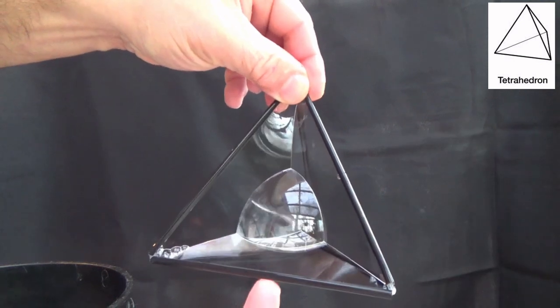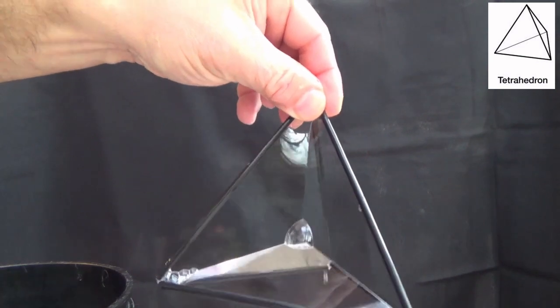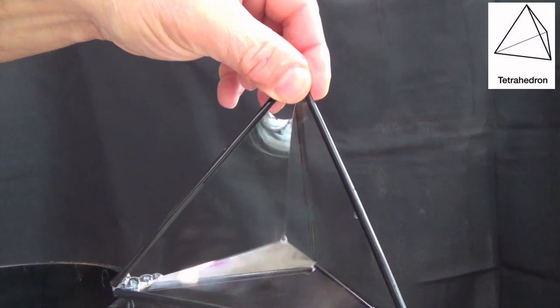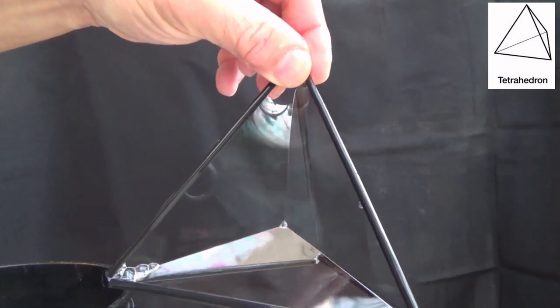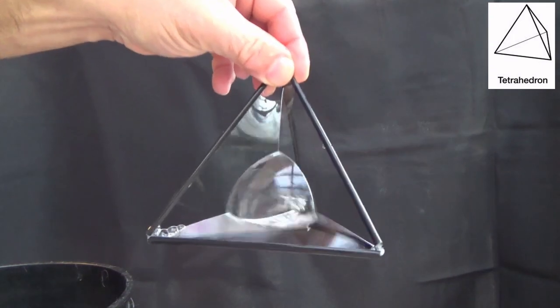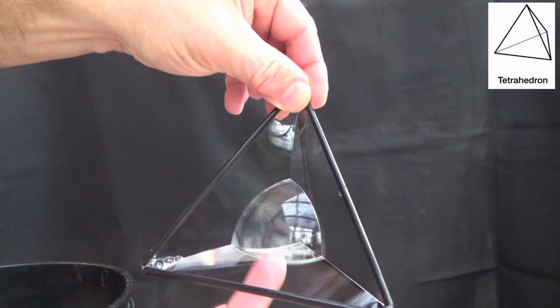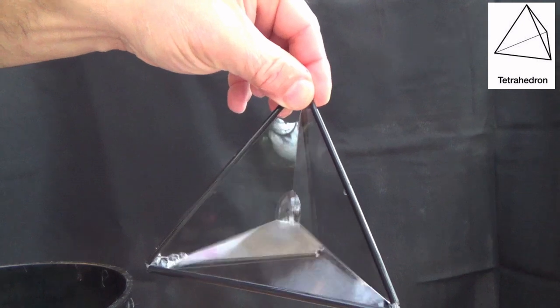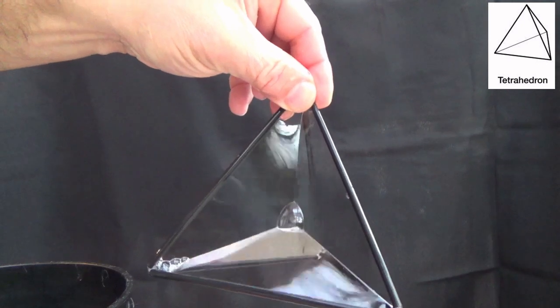One other cool thing that happens, if you pop that, boom, look what just happened. We got a little tiny one, and we pop that, we get even a tinier one. I try to pop that, but my fingers are just too big. So here that one is again in slow motion.